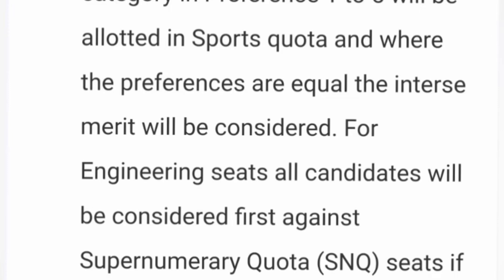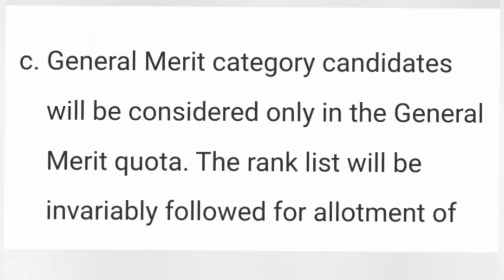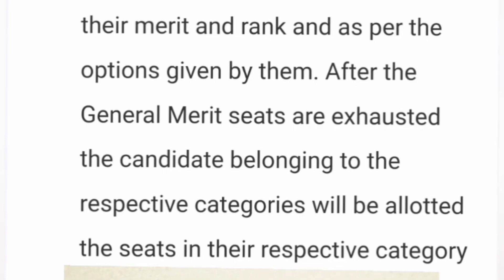General merit category students will always be allotted seats in the general merit category only, as they have no reservation quota. For reserved category students, it's important to remember that their rank is first checked for allotment in the general merit category. If a reserved category student qualifies for a general merit seat, they will be allocated one. If not, the system checks their reservation category — SC, ST, or OBC — and allocates accordingly.